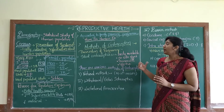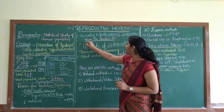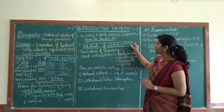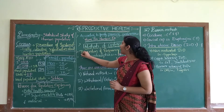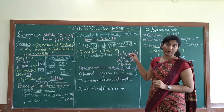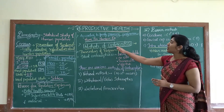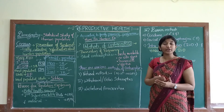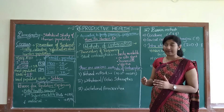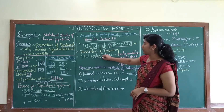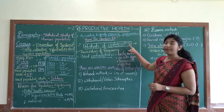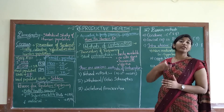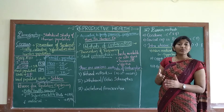Now we will study the methods of contraception. Contraception means prevention of pregnancy. Whatever methods or devices we use to stop or prevent pregnancy are called contraceptives.